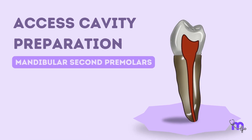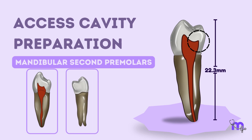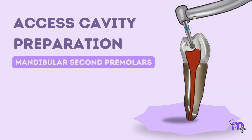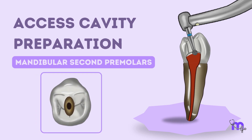Now let's discuss the last of the premolars, the mandibular second premolar. With a length of 22.3 mm, it is similar to the mandibular first premolar but with a more prominent lingual horn. While it usually has only one root and one root canal, in some cases it could also present with two or three roots or a bifurcation of the root canal. The access opening technique is the same as for the first premolar, except that the access is done at the central fossa.